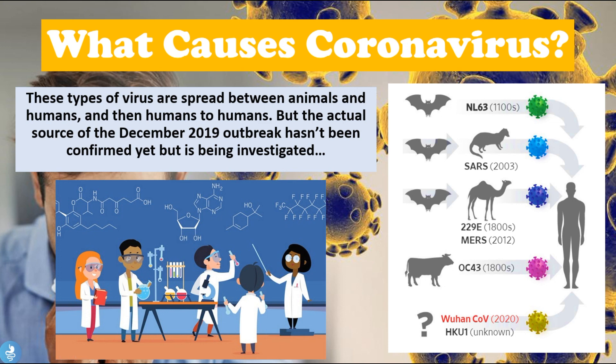From previous coronavirus outbreaks such as SARS in 2003 and MERS in 2012, we found there was an initial spread of the virus first from an animal into a human. Common animal carriers include camels, bats, and snakes. However, much further research and investigation is still being done, and the cause of the December 2019 outbreak in Wuhan, China is still said to be unknown.